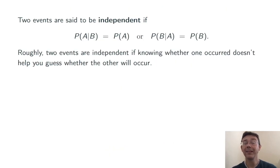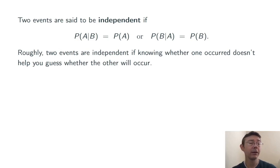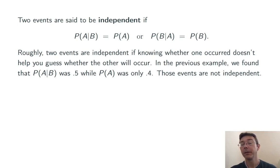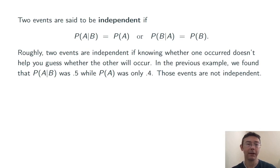Two events are said to be independent if the probability of A given B equals the probability of A, or equivalently, if the probability of B given A equals the probability of B. Roughly speaking, two events are independent if knowing whether one occurred doesn't give you any information about whether the other occurred. In this last example, P(A|B) was 0.5 while P(A) was only 0.4 — knowing they ordered an appetizer increases the chance of ordering alcohol — so those two events were not independent; we say they are dependent.